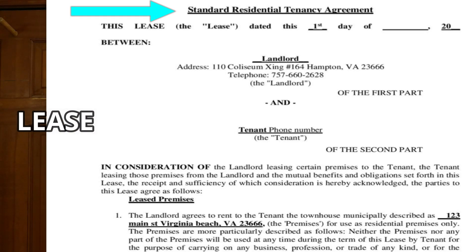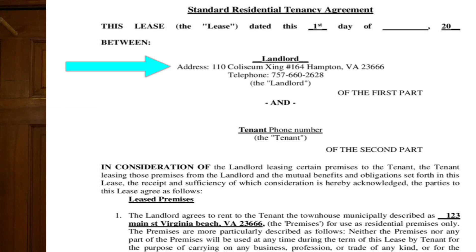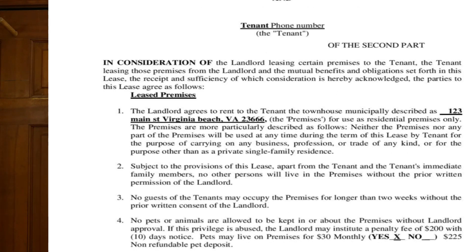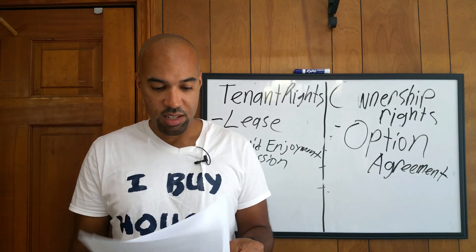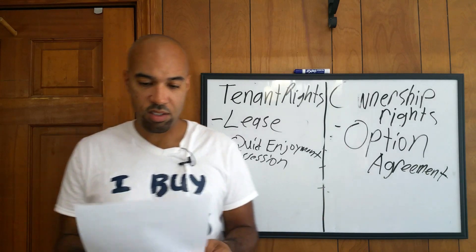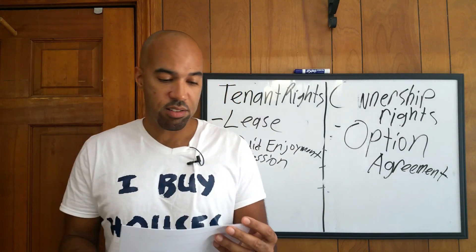Here's your standard residential tenancy agreement. The first thing is landlord — that's me — up top, and the tenant. Make sure you put the tenant phone number on your lease so you don't be scrambling for the phone number. Number one: in consideration of — this is all legal stuff — the landlord agrees to rent. Tenant agrees to buy the townhouse described at 123 Main Street. That's the premises. All this other stuff is just standard leasing stuff. Let's go to the terms.